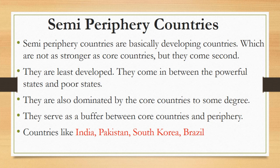Semi-periphery countries are basically developing countries which are not as strong as core countries but they come second. They come in between the powerful states and poor states — neither so strong nor so weak. Instead, they are developing countries. They are also dominated by the core countries to some degree and serve as a buffer between core countries and periphery. Countries like India, Pakistan, South Korea, Brazil, etc. come under this category.